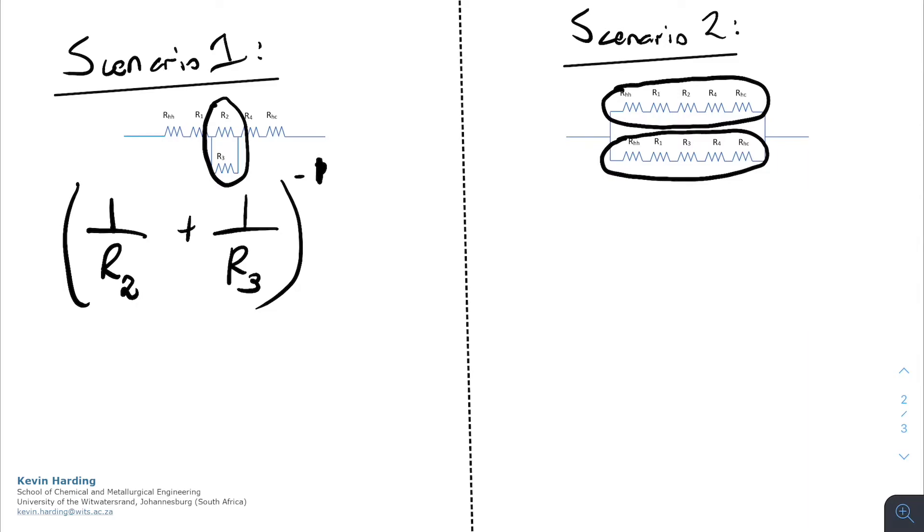And all of those on the bottom. We will then take one divided by that plus one divided by the bottom section and we will again invert that.